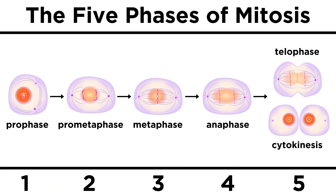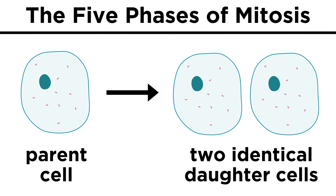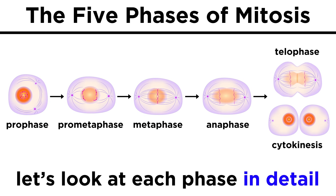Mitosis is divided into five phases: prophase, prometaphase, metaphase, anaphase, and telophase. At the completion of telophase, there is also cytokinesis. Once all this is finished, we end up with two identical cells, each with all the genetic information pertaining to that organism. But let's start at the beginning and learn what happens in each phase.